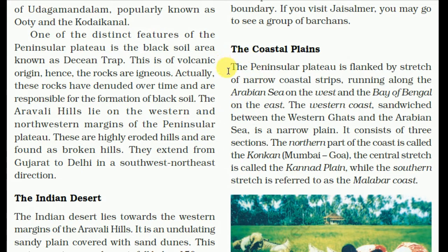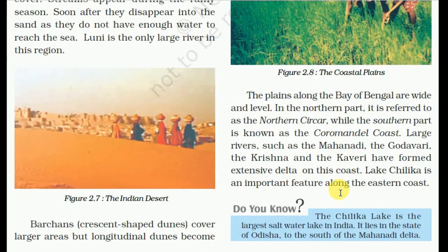The coastal plains — the peninsular plateau is flanked by strips of narrow coastal land. Running along the Arabian Sea on the west and the Bay of Bengal on the east. The western coast is sandwiched between the Western Ghats and the Arabian Sea. It consists of three sections: the northern part is called Konkan (Mumbai to Goa), the central stretch is called the Kannad Plain, and the southern stretch is referred to as the Malabar Coast. The plains along the Bay of Bengal are wide and level. In the northern part it is referred to as the Northern Circar, while the southern part is known as the Coromandel Coast. Large rivers such as the Mahanadi, Godavari, Krishna, and Kaveri drain into the eastern coast.